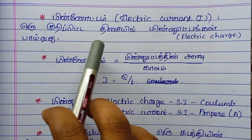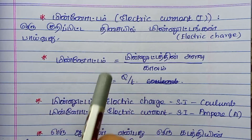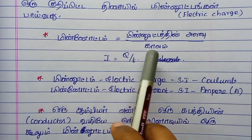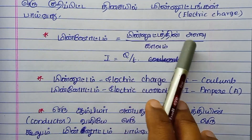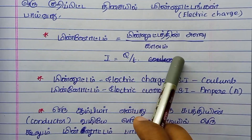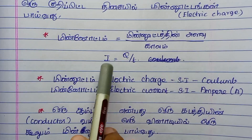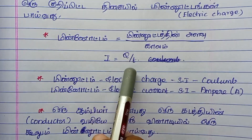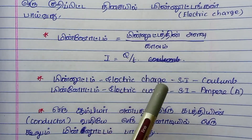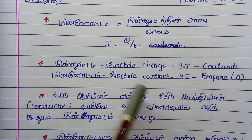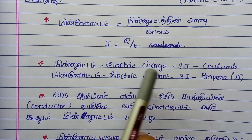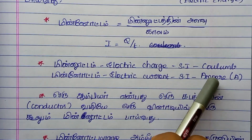Current is the flow of charges. Electric current I equals Q divided by T, where Q is charge and T is time. The SI unit of electric charge is the Coulomb.